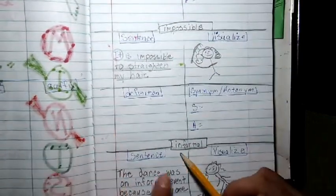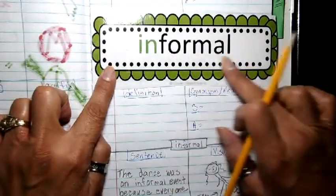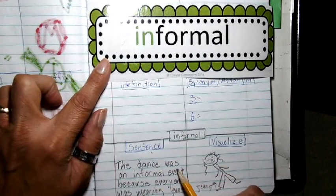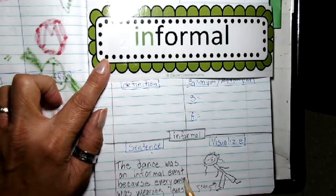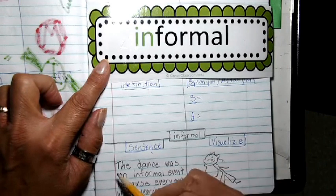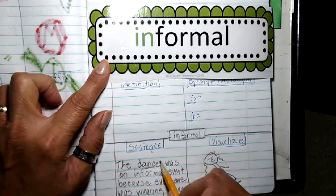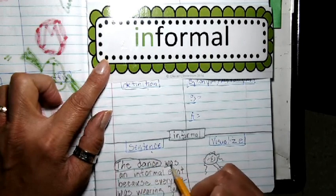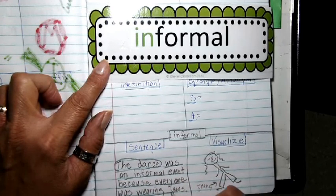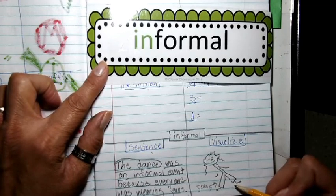Then my next word is informal. That's informal. The sentence I used is, the dance was an informal event because everyone was wearing jeans. Of course, I start with a capital letter. My subject, of course, is dance. My complete predicate, I'm going to underline. Of course, always end with punctuation. And there I am wearing my really cool jeans.